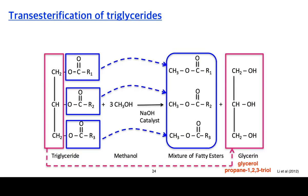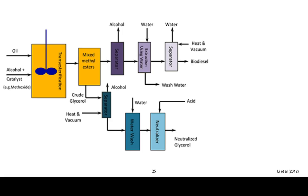Transesterification doesn't actually get rid of the ester functional group — it converts the ester from a triglyceride into singular methyl esters. We have a flowchart showing how the combination of oil, alcohol, and catalyst undergoes transesterification to produce methyl esters, which are then processed and refined to yield biodiesel, with glycerol as a byproduct used for other purposes.